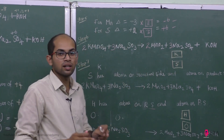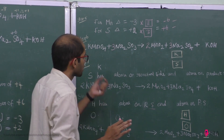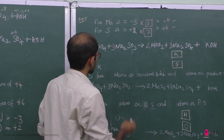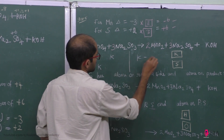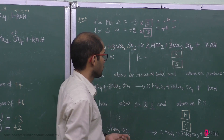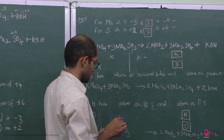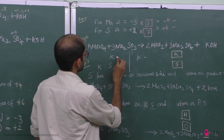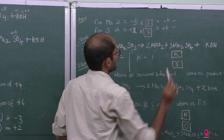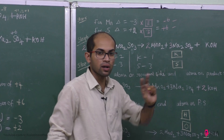Now balance all atoms other than oxygen and hydrogen. Potassium: reactant side has 2 potassium, product side needs 2 KOH. Sulfur: reactant side has 3 Na2SO3, product side has 3 Na2SO4 — automatically balanced. So 3 on each side, no problem.